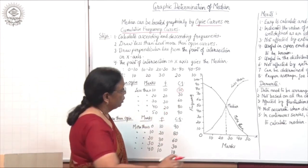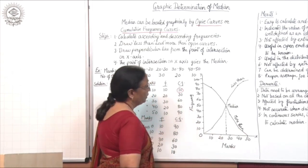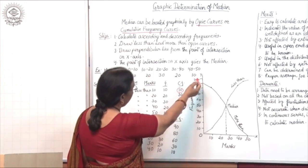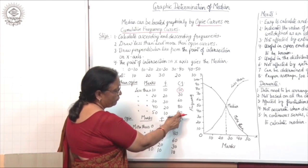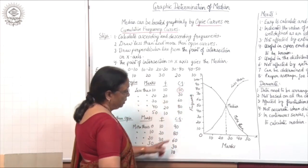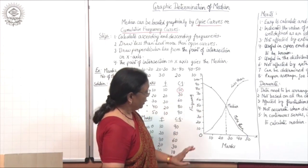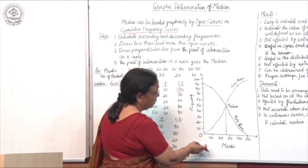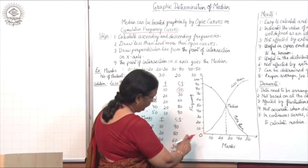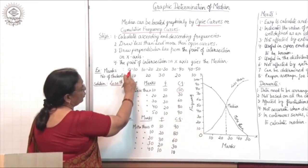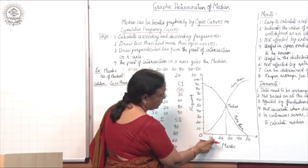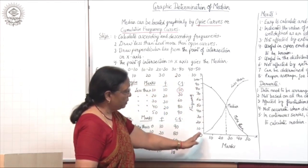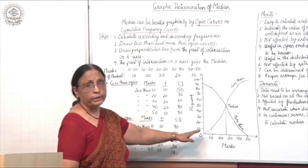The next step is to draw the diagram or graph. Take the Y axis up to 100, since 90 is the maximum frequency. Divide the Y axis equally into 10 parts: 10, 20, 30, and so on up to 100. On the X axis, take marks ranging from 0 to 50 and divide it equally into 5 parts. Frequency goes on the Y axis and marks on the X axis.